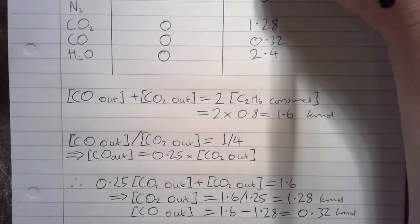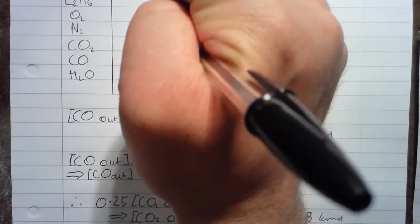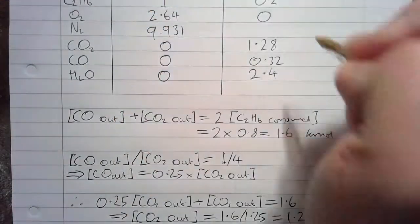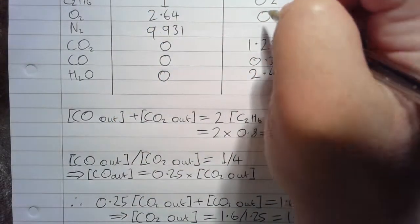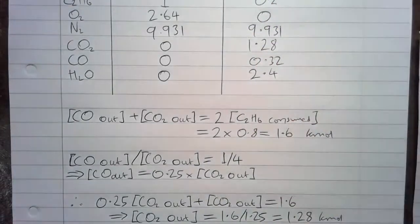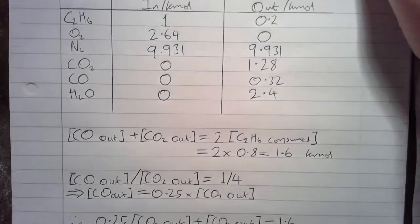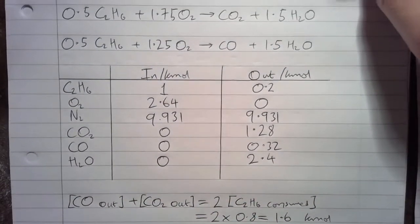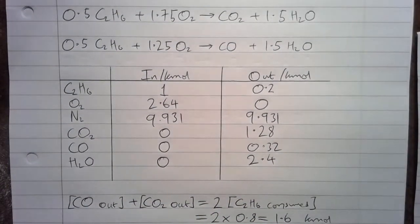So we can fill that in on our table, 9.931, and we're treating this as inert, so then it comes out in the outlet as well. And so that is how we can calculate the incomplete combustion material balance for ethane.